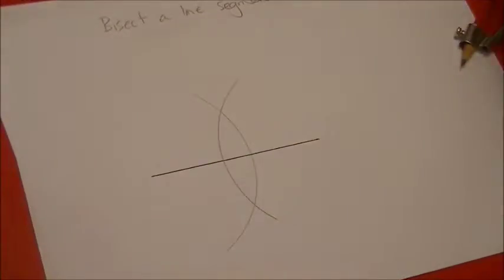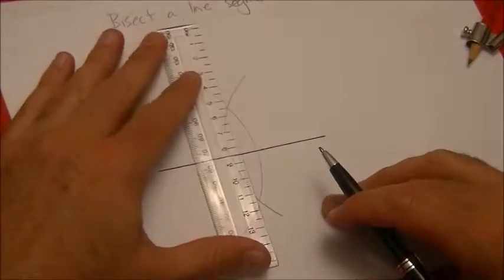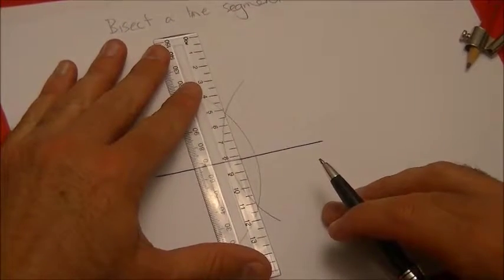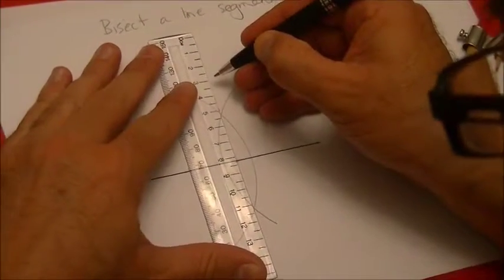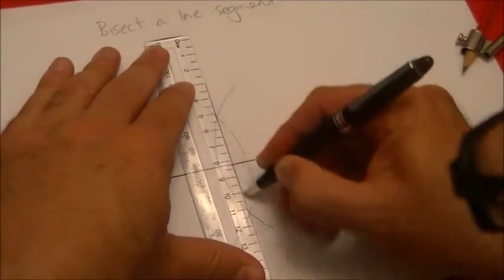And now I'm going to grab my ruler and put it through those intersection points there. So straight up and down. And when I say straight up and down, this should actually be exactly straight up and down.